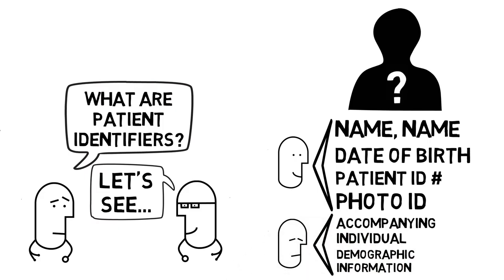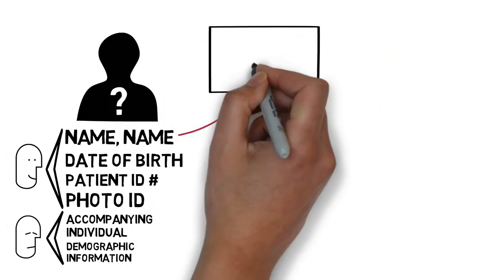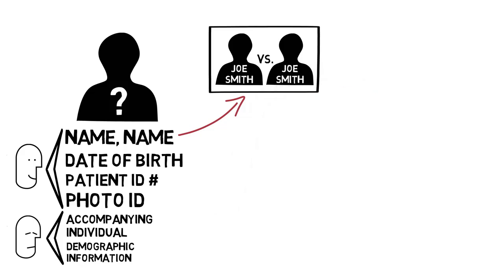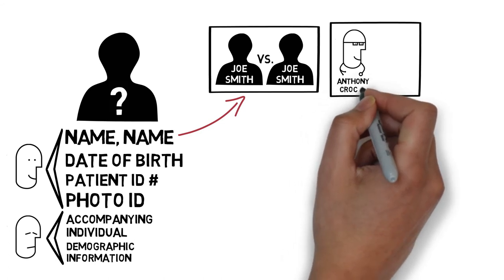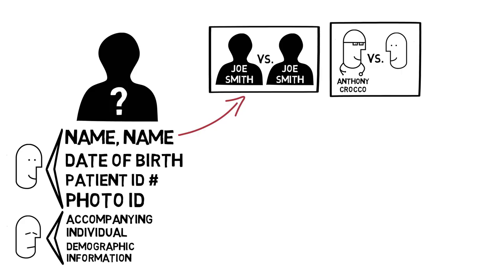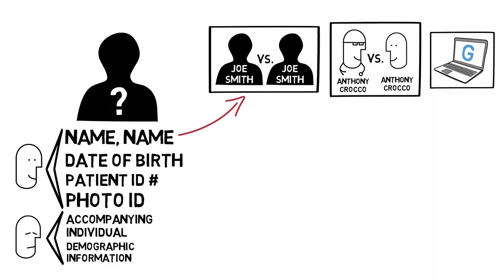We often stress the importance of having two patient identifiers, and it's important to understand why this is the case. Let's start with a patient's name. For common names, it's not unusual for patients with the same or similar names to be on the same unit. Even less common names are not that unique. As it turns out, Anthony Crocco is not only a pediatrician in Ontario who likes Sketchy EBM, but he's also a guy who does real estate in Florida. If you think your name is unique in the world, see what a quick Google search teaches you.